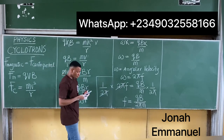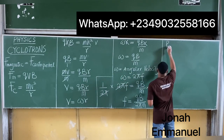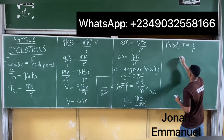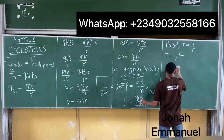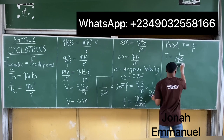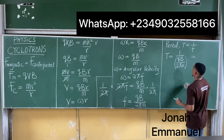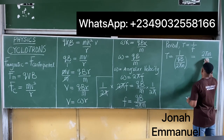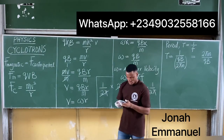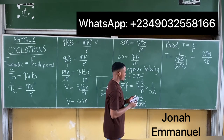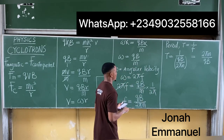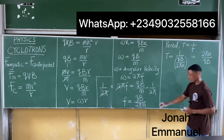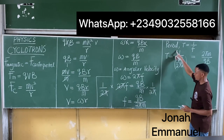Also, if you have to find the period: period T = 1/f. Since f = qB/(2πm), taking the inverse gives T = 2πm/(qB). That is the period of a cyclotron.